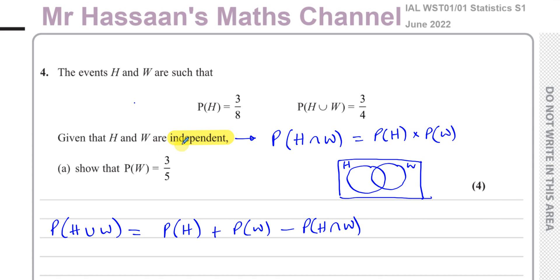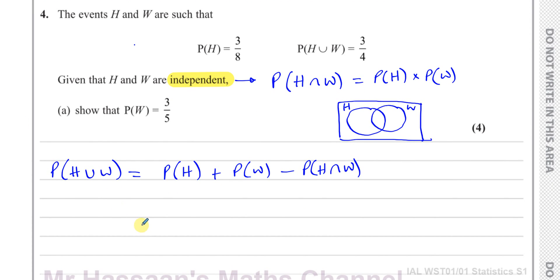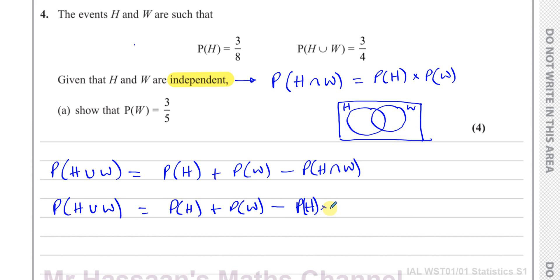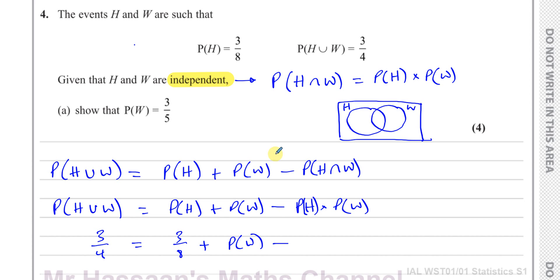Because H and W are independent, we can replace the intersection with the probability of H times the probability of W. So the probability of H union W equals the probability of H plus the probability of W minus the product of the probability of H times the probability of W. We have everything except the probability of W, which we need to find. So: 3 quarters equals 3 eighths plus P(W) minus 3 eighths times P(W). We have one unknown.